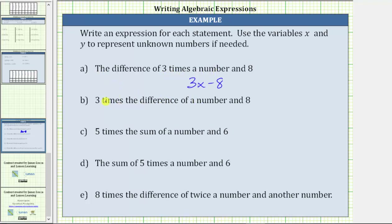To write an expression for three times the difference of a number and eight, we need to write down the three and then put the difference in parentheses. The difference of a number and eight is x minus eight, giving us three times the quantity x minus eight. If we distribute, this is not equivalent to the expression from part a.